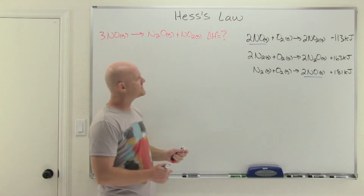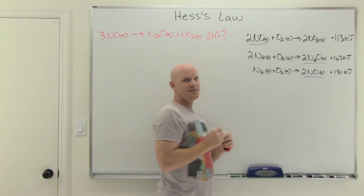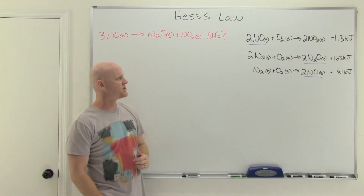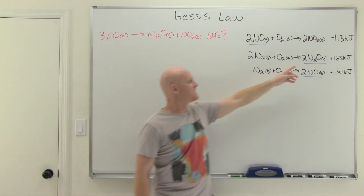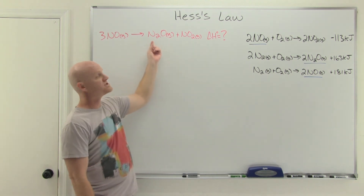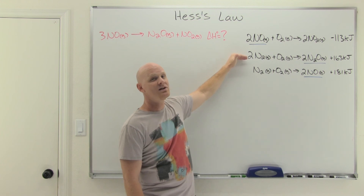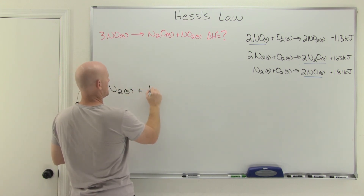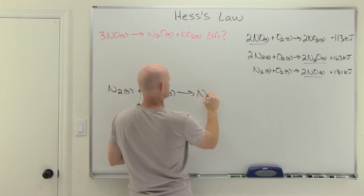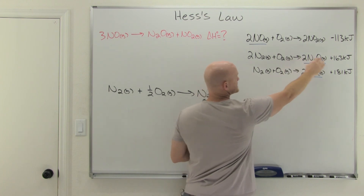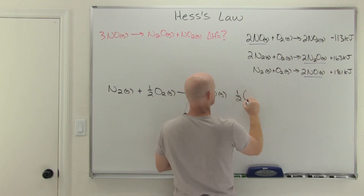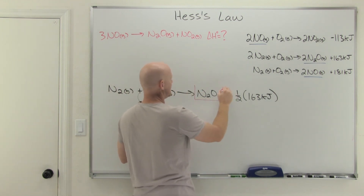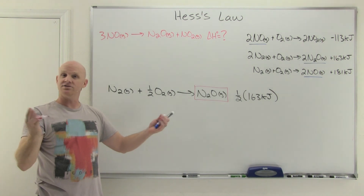Moving on to N₂O, it only shows up in one reaction, so once we manipulate it correctly it won't change again. We need N₂O on the product side with a coefficient of one. In the provided reaction it is on the product side, but with a coefficient of two, so we cut the whole reaction in half: N₂ gas plus one-half O₂ gas goes to N₂O gas. Cutting everything in half gives delta H equal to one-half of 163 kilojoules.